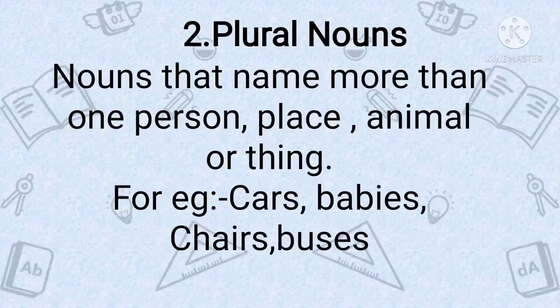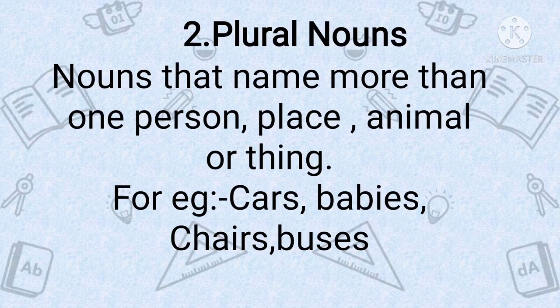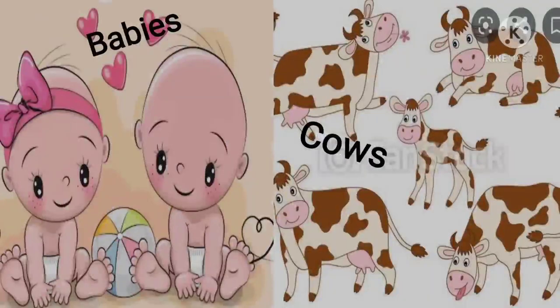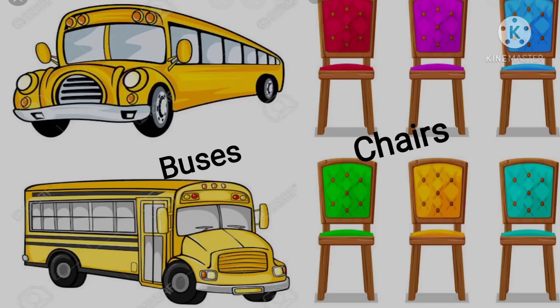Now, plural nouns — nouns that name more than one person, place, animal, or thing are called plural nouns. For example: cars, babies, chairs, buses. As you can see in the picture: babies, cows, buses, chairs.